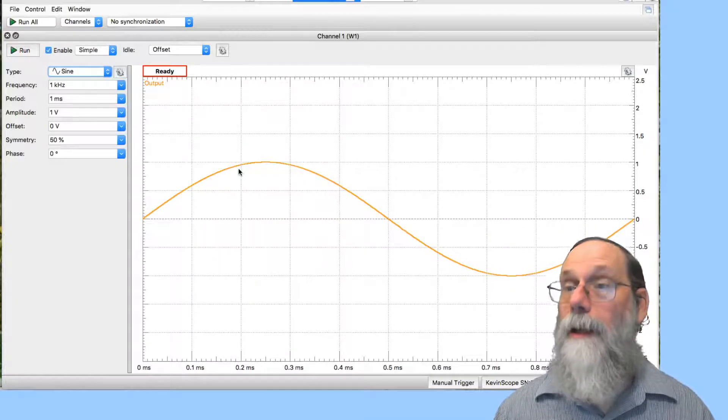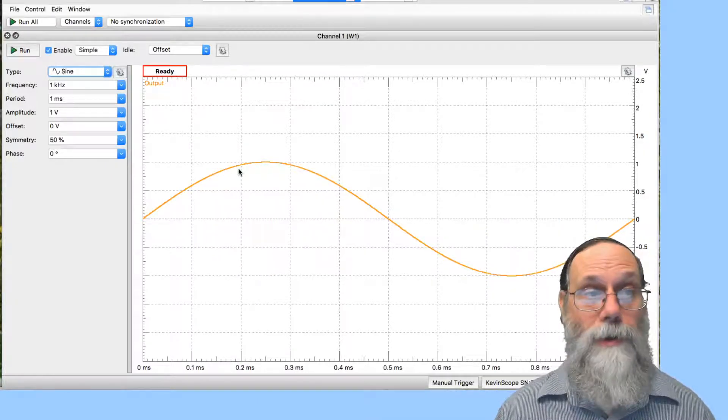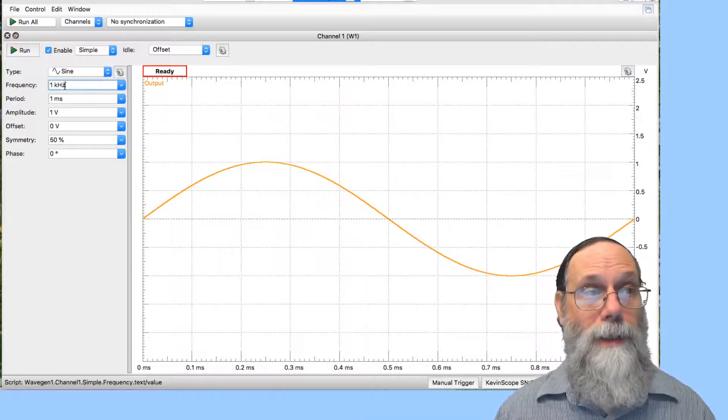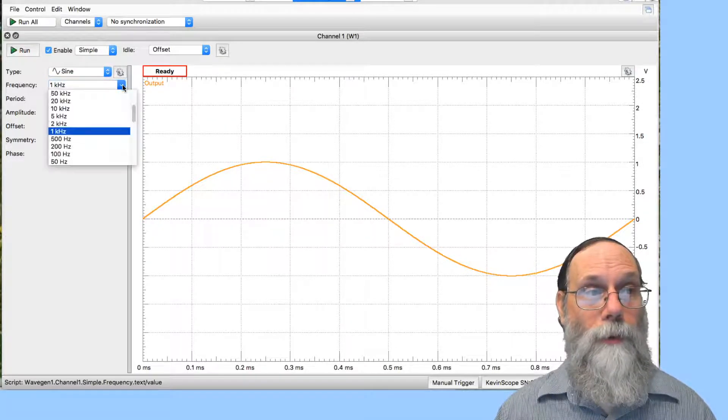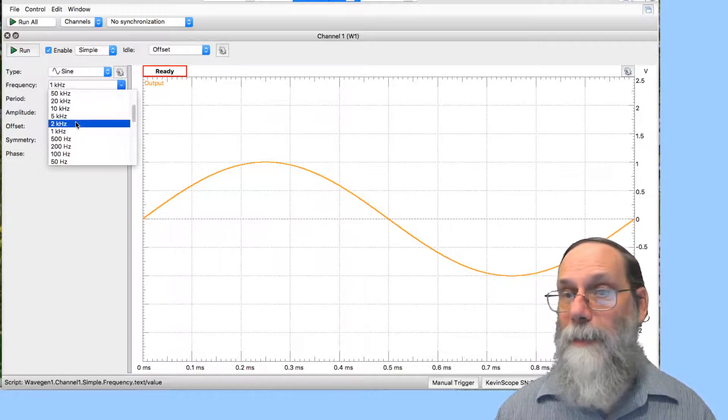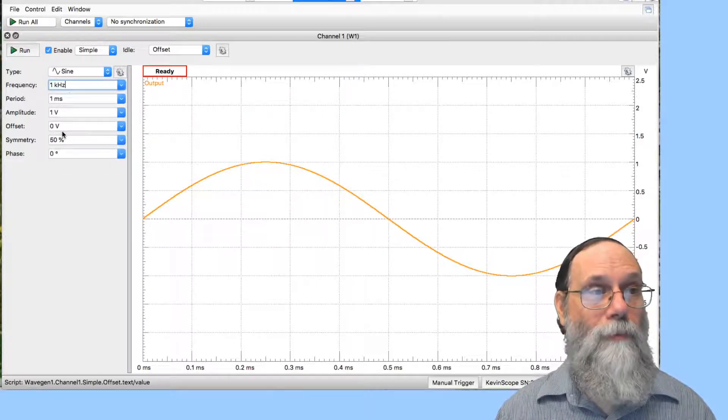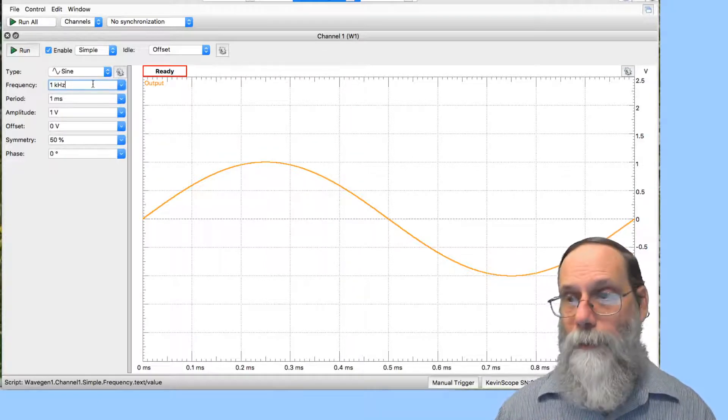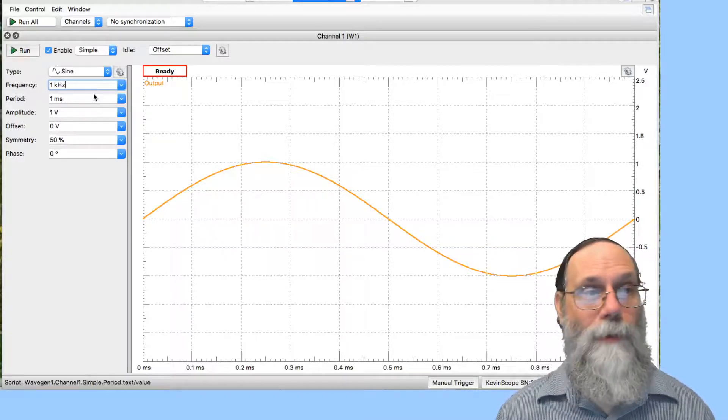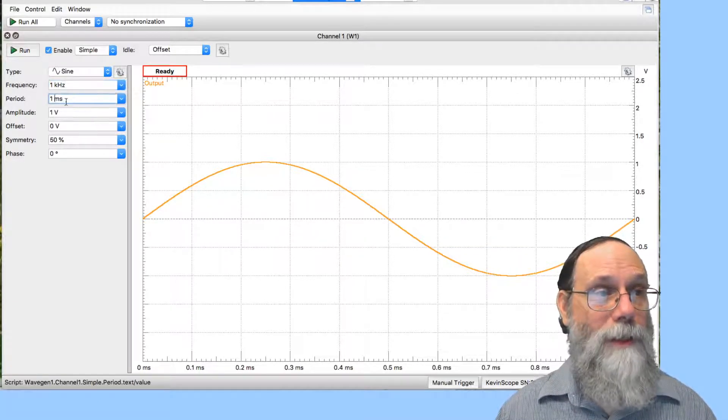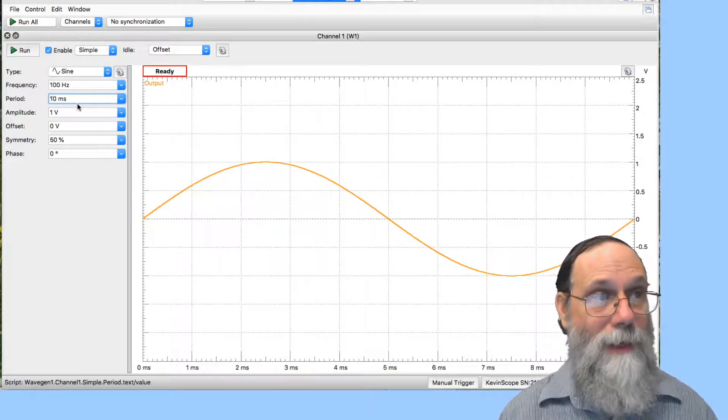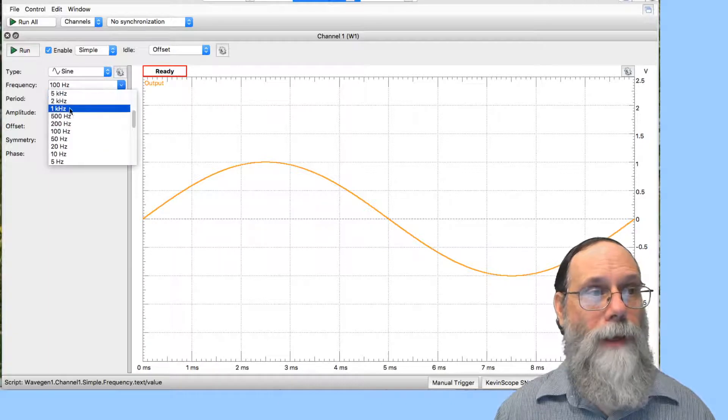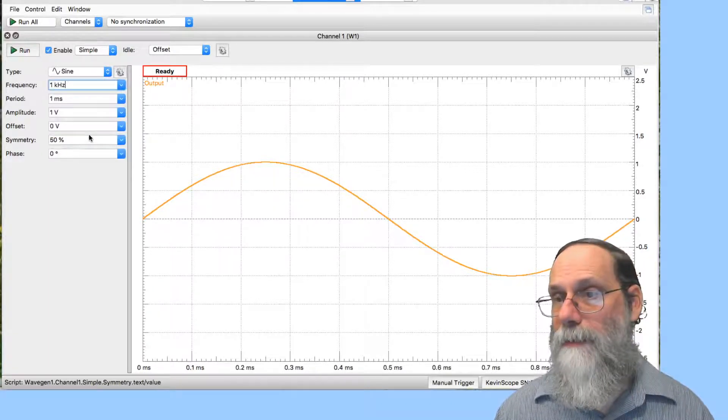Let's go back to sine waves, because that's sort of the canonical thing that all function generators do. You can specify the frequency, and you can either type it in here in this box, or there's pull down things that can get you some of the standard popular values. So one kilohertz is easily selected. The period is one over the frequency, so you specify one of these, the other one comes along for free. So if I change this period to be 10 milliseconds, that would change the frequency to 100 hertz, and it's easy to change it either way.